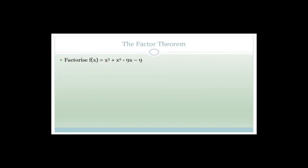Factorize f(x) = x³ + x² - 9x - 9. When we factorize a trinomial, what are we doing? We're finding where it cuts the x-axis. The y value at those points is zero. Similarly with a polynomial, we're trying to find where this graph cuts the x-axis, so we're going to let y equal zero. Therefore we have 0 = x³ + x² - 9x - 9.